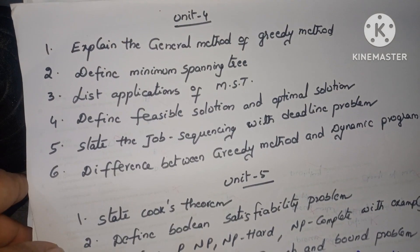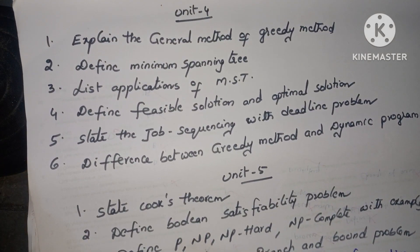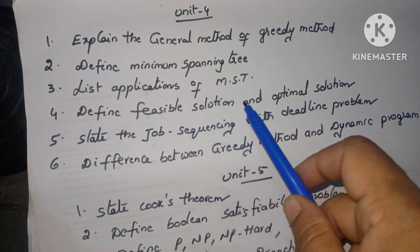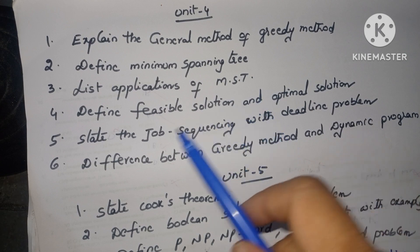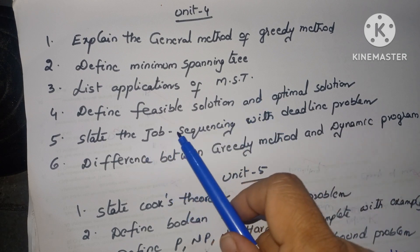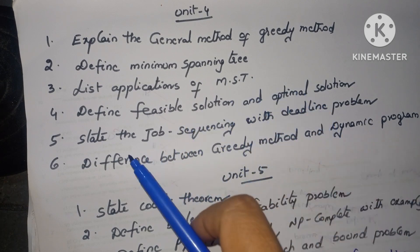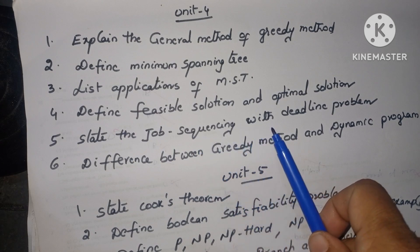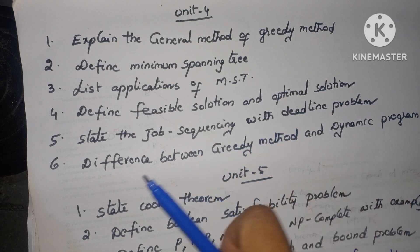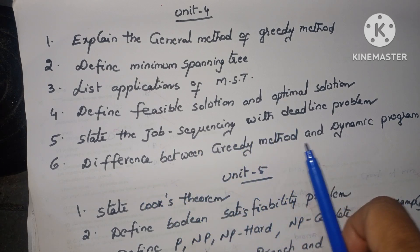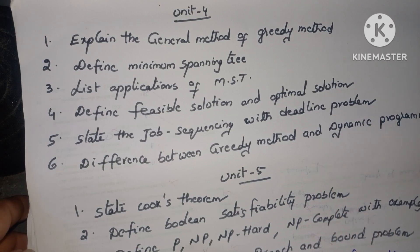Unit four important questions: Explain the general method of the greedy method. Define minimum spanning tree and list the applications of MST. Define feasible solution and optimal solution. State the job sequencing with deadline problem. Difference between greedy method and dynamic programming.